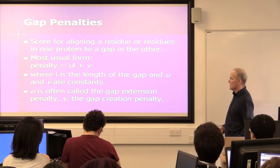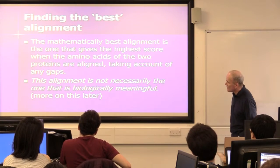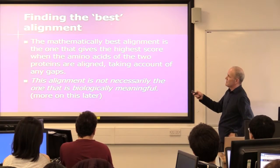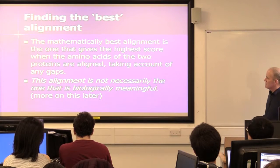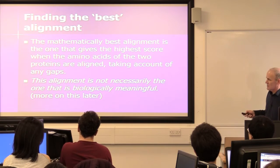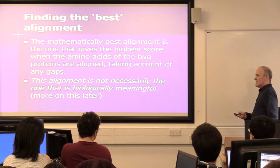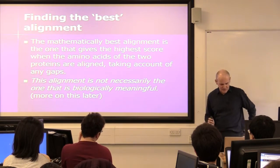So we have a penalty and a score. Then you want to find the best alignment — in quotes — which is the mathematically best alignment that gives the highest score when you align the two sequences, taking account of any gaps, the scoring scheme, and the gap penalty. That's not necessarily the one that's biologically meaningful, and I'll come to that later.